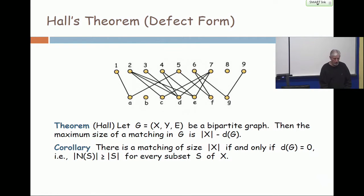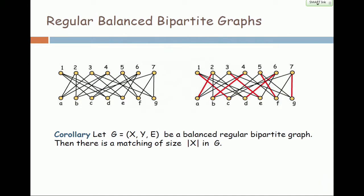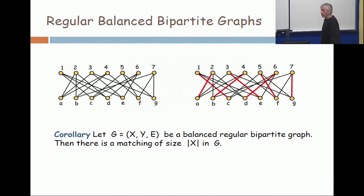Let's take an application of this to this special setting. Now, on the left, I'm showing a bipartite graph. It's a special kind of bipartite graph. It's first of all balanced. There are seven vertices on both sides.